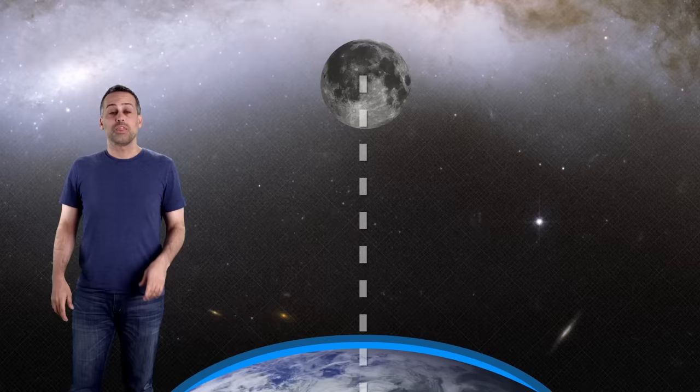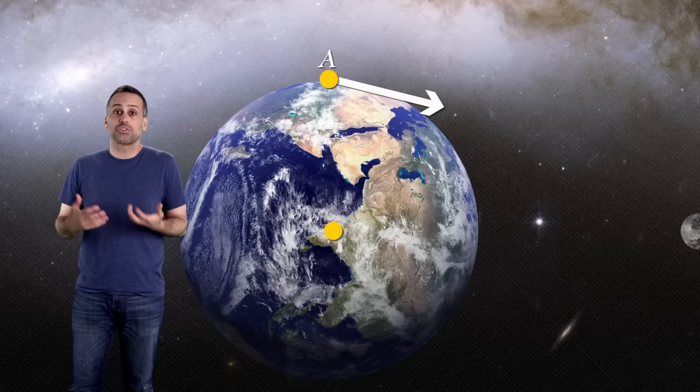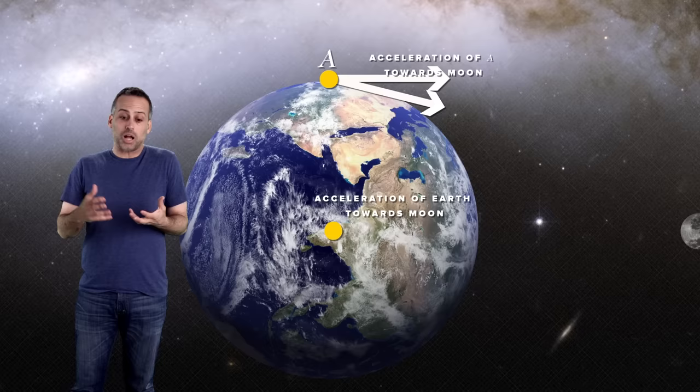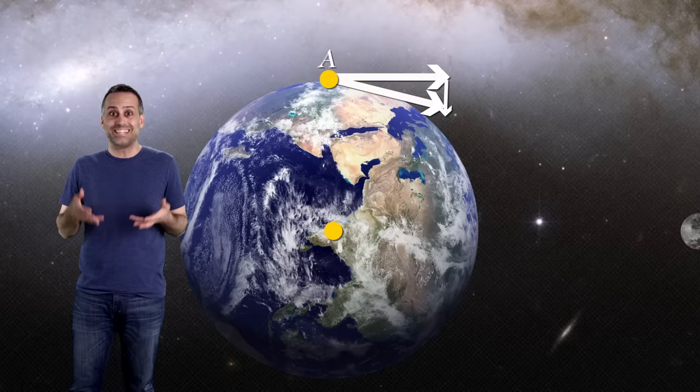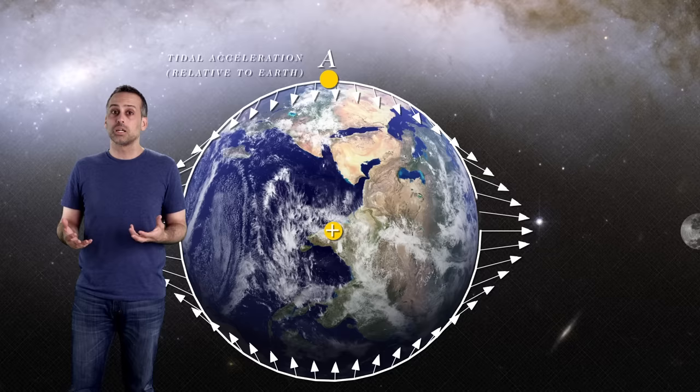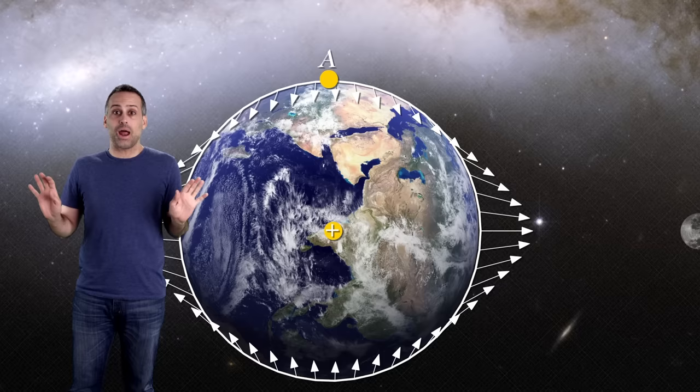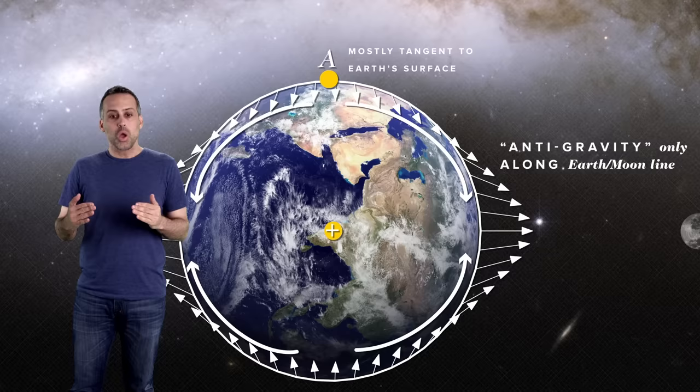The key is to look at the tidal acceleration of objects that are not on the Earth-Moon line. For instance, a block at this location is going to be pulled this way by the moon. But of course, the whole Earth is pulled that way by the moon chasing after the block. So relative to the Earth's surface, the block's tidal acceleration is almost radially inward. In other words, down. In fact, if we map out the tidal acceleration vectors that you'd see at different points on Earth's surface, they look like this. As you can see, tidal forces only act like anti-gravity if you're right on the Earth-Moon line. At most places, those vectors are largely tangent to Earth's surface, which would push water sideways.